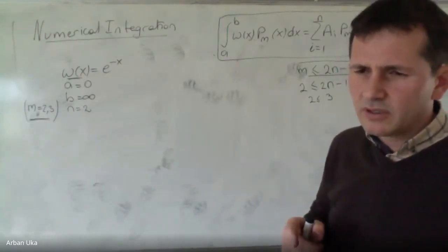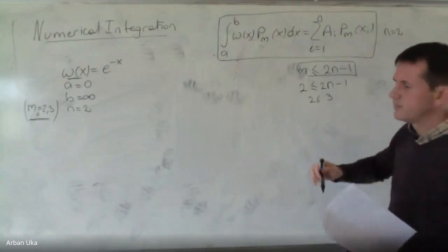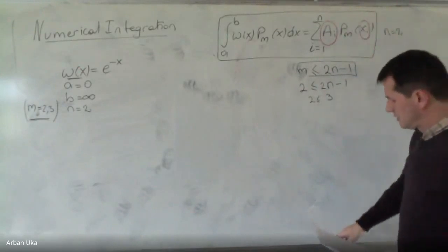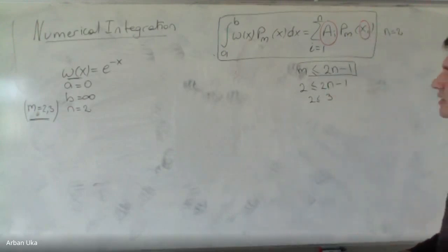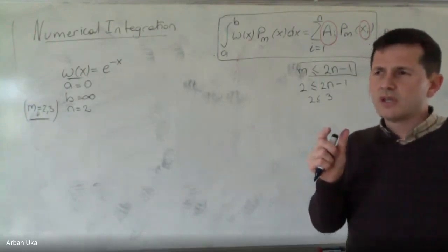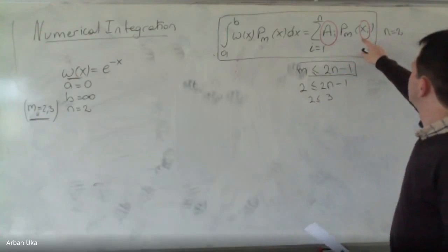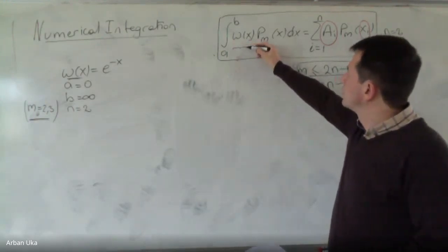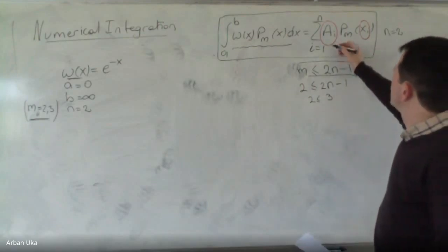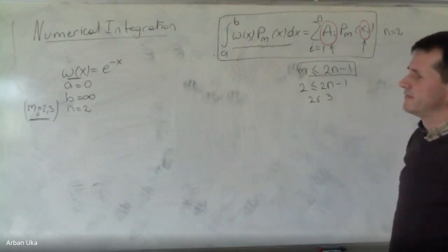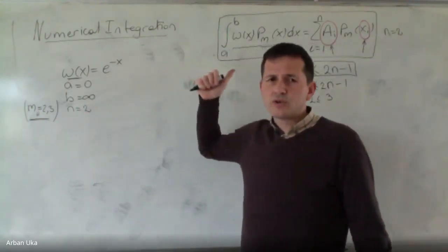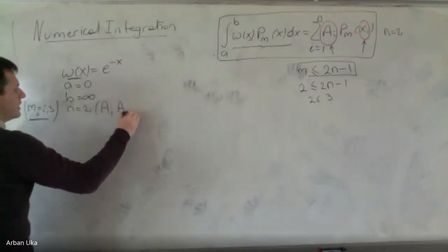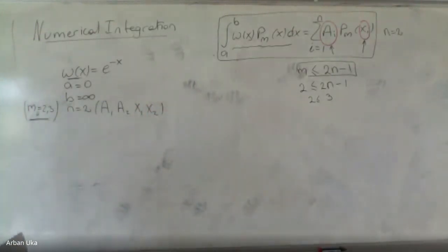But now the question is: what is the unknown? When we use Gaussian quadrature, what do we need to know? We need to know these coefficients and these points. So the unknowns for us are a1, a2, x1, and x2 — the coefficients that multiply the function at these values of x. Once given this integral, any time we want to integrate over a specific range, we need to figure out the values of ai and xi. So in this case, n is 2, giving us four unknowns.